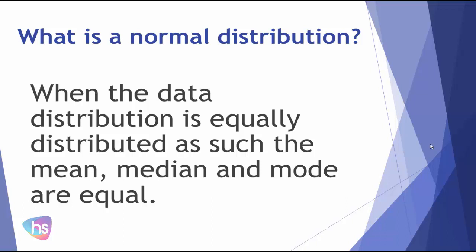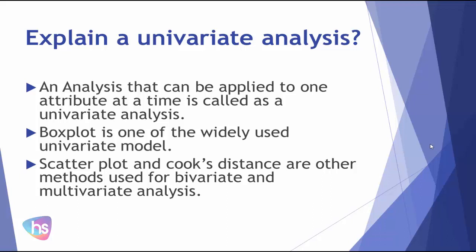Coming to the next question: explain univariate analysis. An analysis that can be applied to one attribute at a time is called univariate analysis. Box plot is one of the widely used univariate models. Scatter plot and Cook's distance are other methods used for bivariate and multivariate analysis.